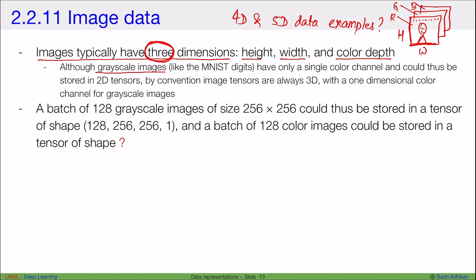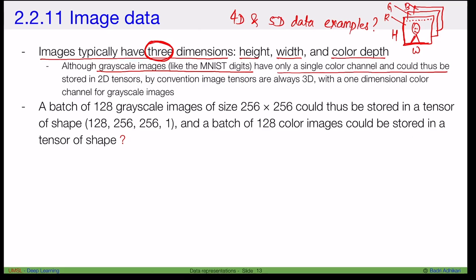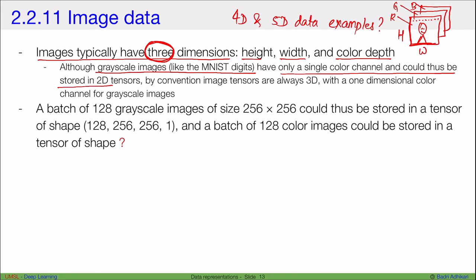Although grayscale images like the MNIST digits, which we'll talk about more, have only a single color channel and could thus be stored in 2D tensors. But image tensors by default are always 3D with one-dimensional color channel for grayscale images, but usually three channels for color images. So for color images, we actually have three channels.